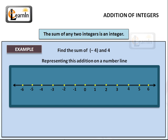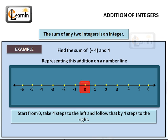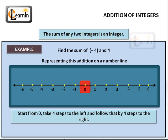Let's look at one more example — let's find the sum of minus 4 and plus 4. Representing this addition on a number line, we start from 0, take 4 steps to the left for minus 4, and follow that with 4 steps to the right for plus 4. We end up on 0, and so (−4) + (+4) = 0.